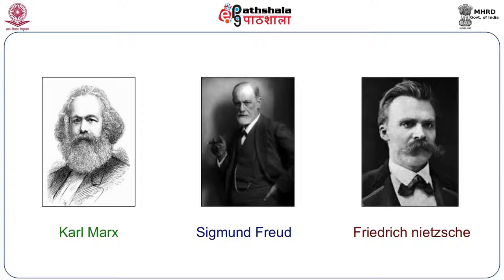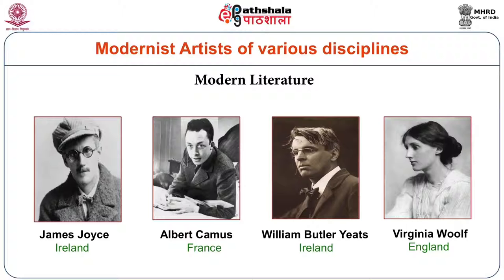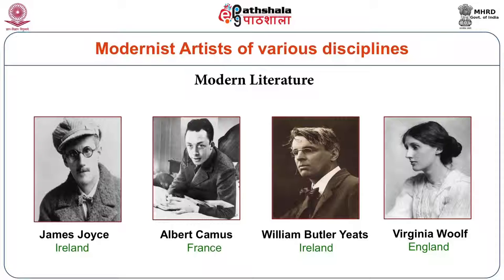Look at what would happen when we bring in the philosophies of these three people and place them alongside Victorian morality. We will now very quickly look at some of the major modernist artists. Take a look at the photographs and the names. It is very interesting that we have modernists from different parts of the world. James Joyce is one person who automatically comes to mind — he is considered a high modernist from Ireland.